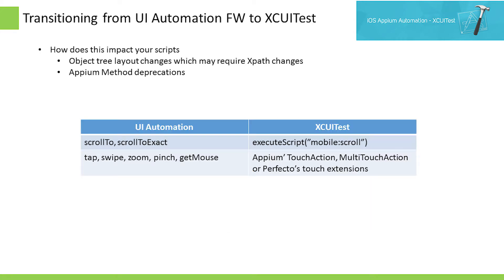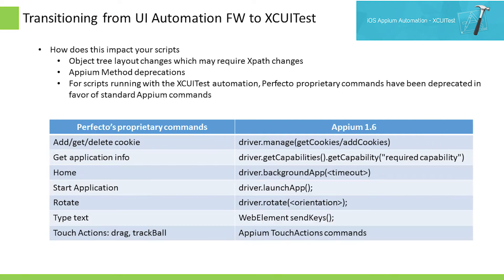The next change is handling deprecated Appium functions such as ScrollTo. You will want to modify those functions to use the latest Appium 1.6 functions. Next are functions that Perfecto offered in the past as proprietary implementations. With Appium 1.6, equivalent functions are now available as part of the open source standard.